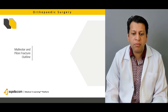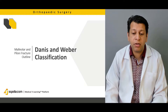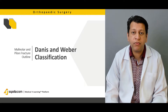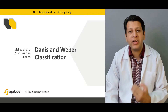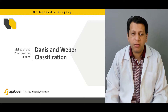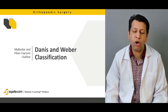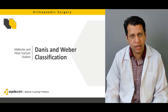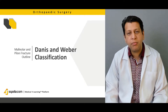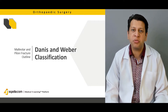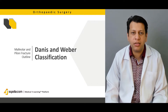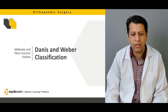Then we will be moving on to discuss the Danis-Weber classification for bimalleolar fractures. There are different types of classification available — usually Lauge-Hansen and Danis-Weber — both are utilized and they both have their own pros and cons, but we will be discussing the Danis-Weber classification in detail.